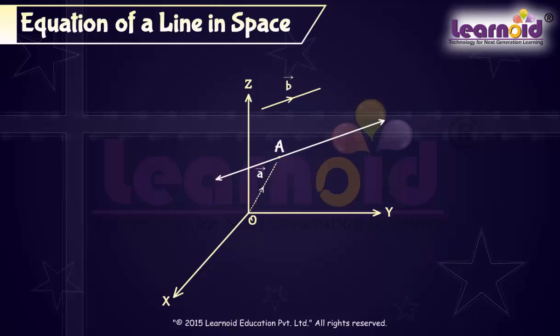Let A be the position vector of the given point A. Let L be the line that passes through the point A and is parallel to the given vector B. Let P be an arbitrary point on the line whose position vector is R.